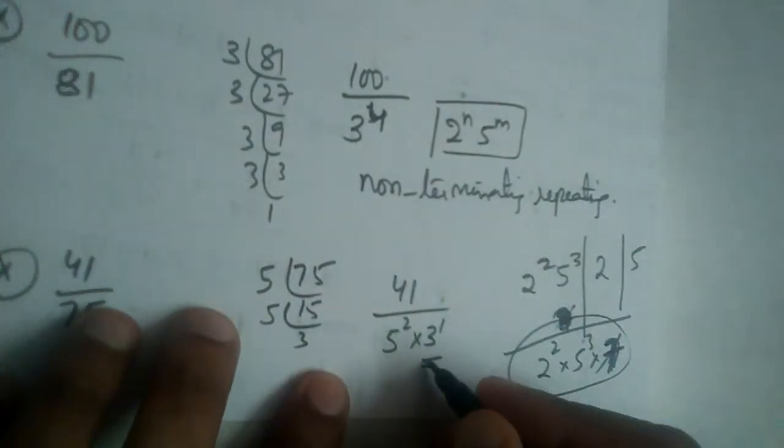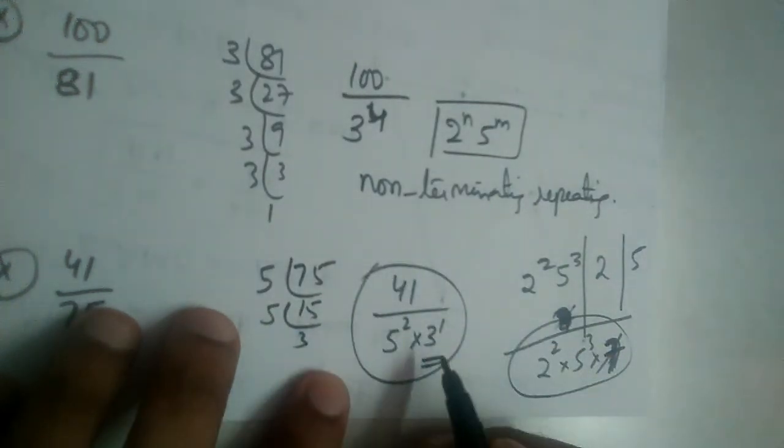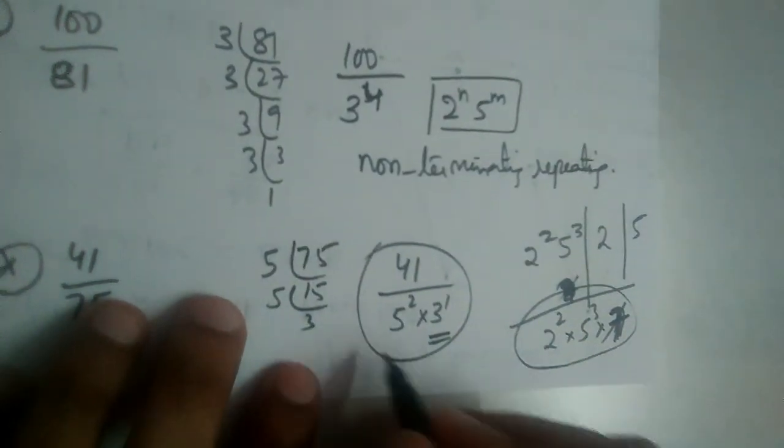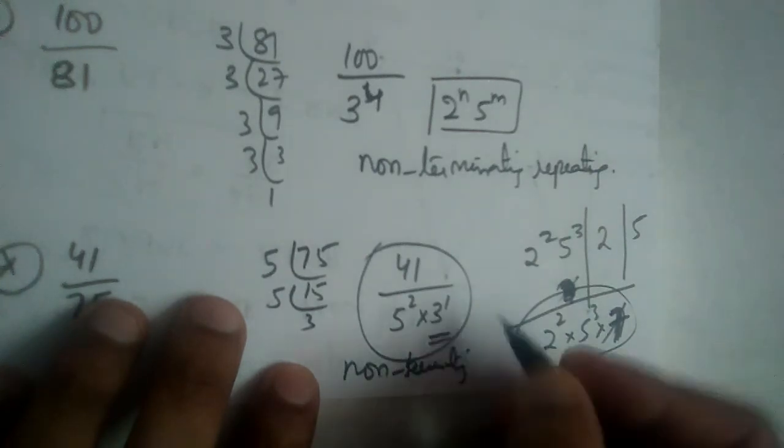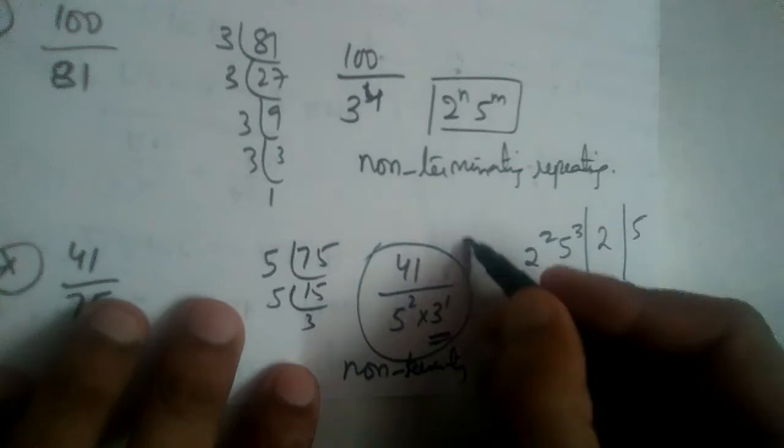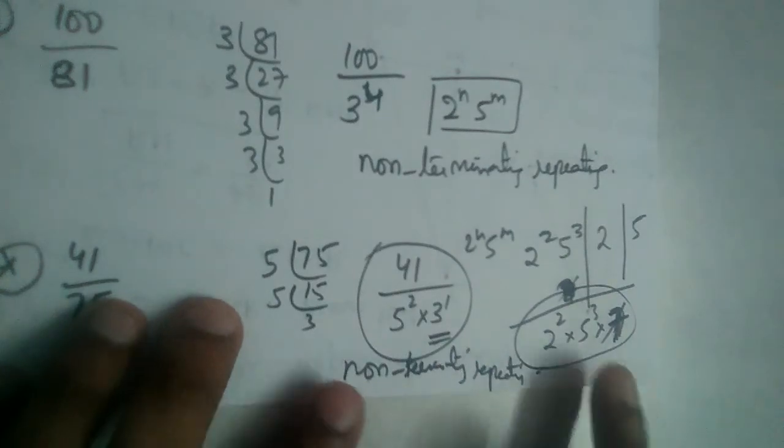We need only 2 or only 5, or both 2 and 5 only. We don't need anything else. So tell me, whether this is terminating or non-terminating repeating? Non-terminating repeating, right? Why? Because the denominator is not of the form 2 power n, 5 power m. Non-terminating repeating decimal.